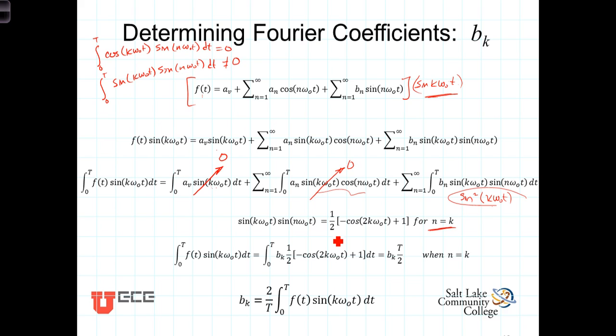This term, using that identity, expands to this. So, this integral here, this last term integral, then becomes the integral from 0 to t, b sub k, n equals k, so b sub k times 1 half times negative cosine of 2k omega-0 t plus 1. And that whole thing is our integrand.